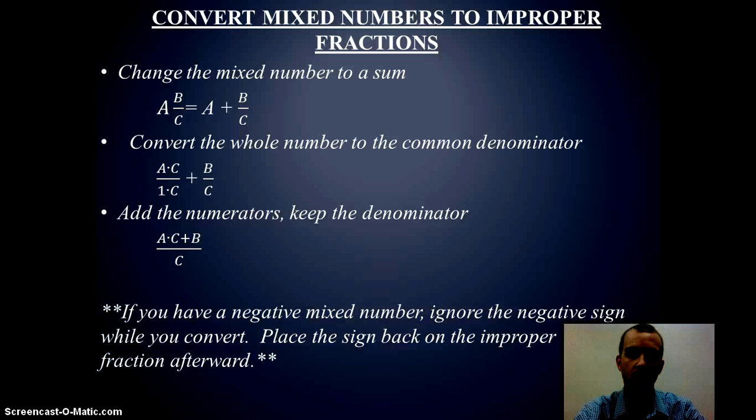Then we can convert that whole number into an actual fraction with the common denominator of the fraction I have. And then we can add our numerators and keep the denominator just like we just did. Big thing to watch is if you have a negative mixed number, you kind of ignore that negative sign until you've finished converting the values. Then you put the negative sign back on at the end.